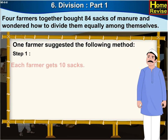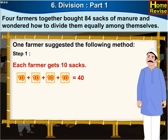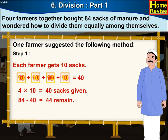Step 1. Each farmer gets 10 sacks. 10 plus 10 plus 10 plus 10 is equal to 40. Four times 10 is equal to 40, so 40 sacks are given. 84 minus 40 is equal to 44, which means 44 sacks remained.